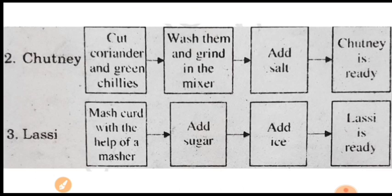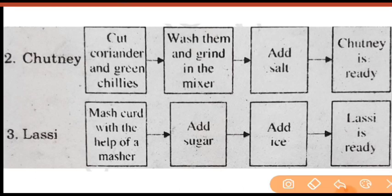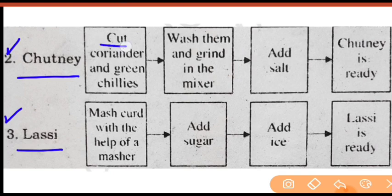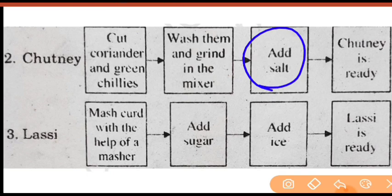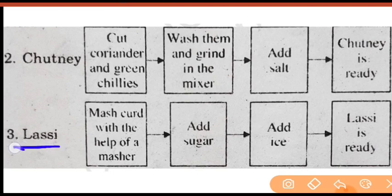Now for the second and third blanks — मैंने यहाँ hint दिया है, but you can write any item of your choice. Second, you can prepare chutney — cut coriander and green chilies, wash them and grind in the mixer. Then add salt and your chutney is ready. You can make it at home.